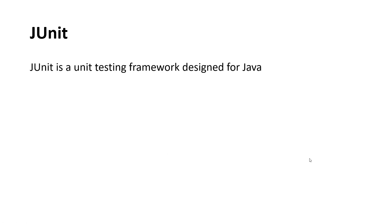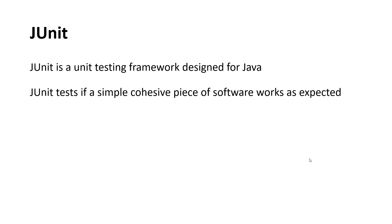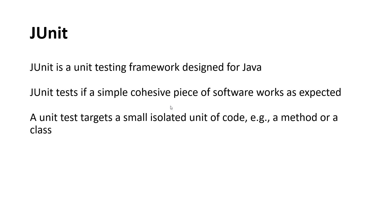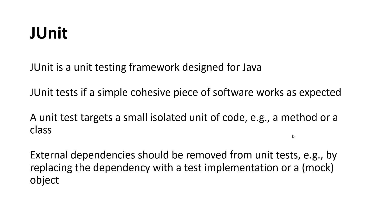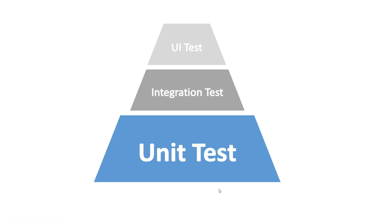JUnit is a unit testing framework designed for Java. It tests a simple, cohesive piece of software to see if it works as expected. A unit test targets a small, isolated unit of code — a method or a class. If we have any external dependencies, such as a database, we have to remove them from the unit tests by replacing them with a test implementation or a mock object. We can create a mock database object with controlled data, since including a real database is a dependency and would not be a true unit test.